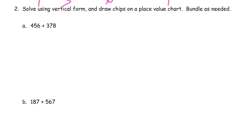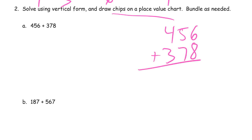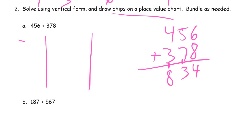Now we're doing the same thing, still doing these vertically but drawing our own place value chart and chips. 456 plus 378. Ones digits first: 6 plus 8 is 14 — that's a ten with four ones left behind. Then 5 plus 7 is 12, and one more is 13 — that's a hundred with three tens left behind. And then 4 plus 3 is 7 hundreds, one more is 8 hundreds. Eight hundred thirty-four. And I draw my chip model.